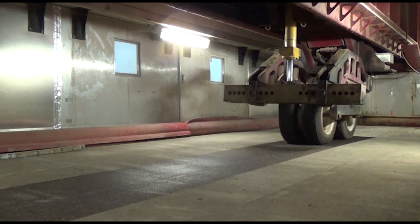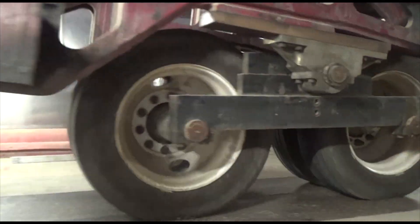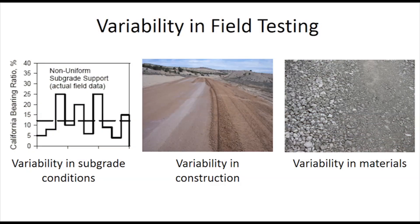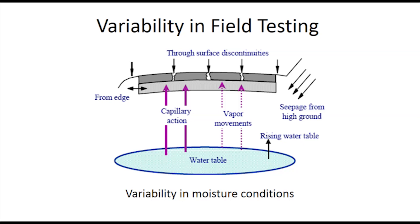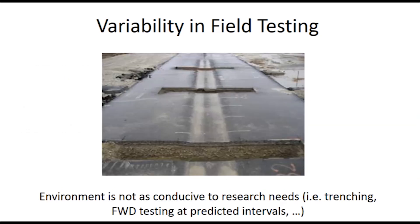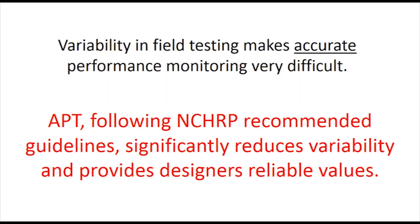APT is highly controlled, unlike most field testing, which can contain significant variability and is hard to decipher and measure. Field testing usually contains significant variability such as in the subgrade conditions, construction methods used, and materials used. Moisture conditions can also produce variability if not accounted for correctly. There may be variances in temperature due to wind, the grade of the road, and other factors. Actual wheel loadings and positioning of the wheel loadings can be very difficult to track. The environment is also not as conducive to research needs, such as FWD testing at predicted intervals, or trenching to observe distress within the individual pavement layers. The more variability there is in a section, the more unreliable the results will be. Values used may provide a designer with a false sense of security.